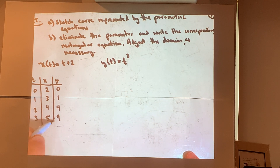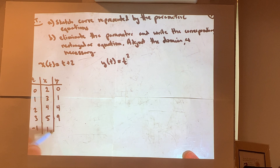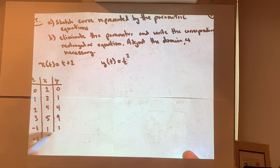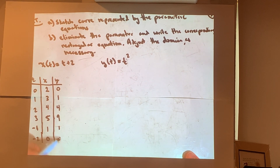Let's also throw in t = −1: we get x = 1, y = 1. And t = −2: x = 0, y = 4. Nothing says t can't be negative.